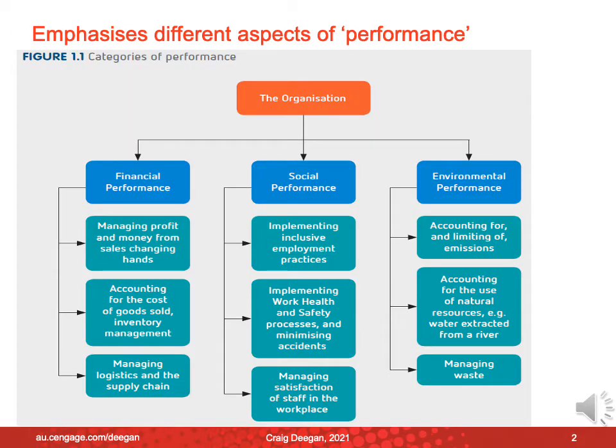In chapter one, we'll emphasise that organisations have different categories of performance. We'll talk about financial performance, social performance, and environmental performance. We don't launch directly into financial accounting or financial measures — we show that there are different aspects of performance.